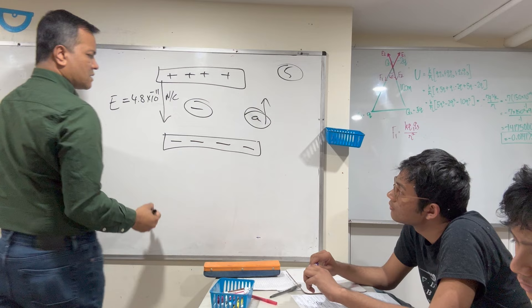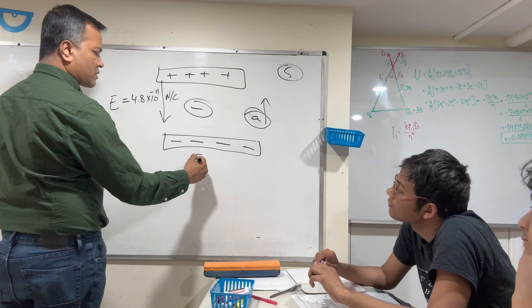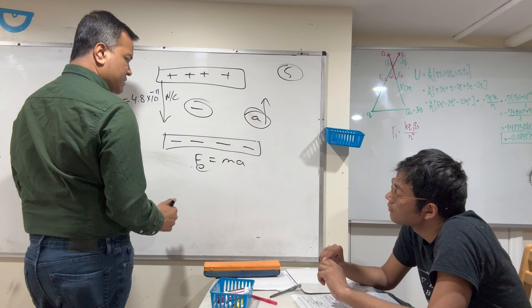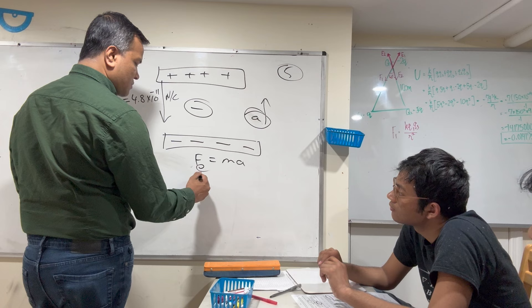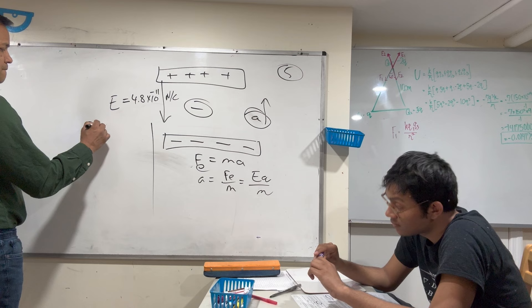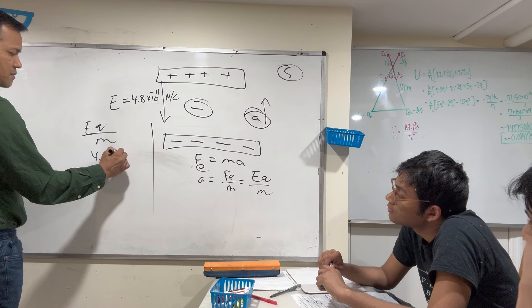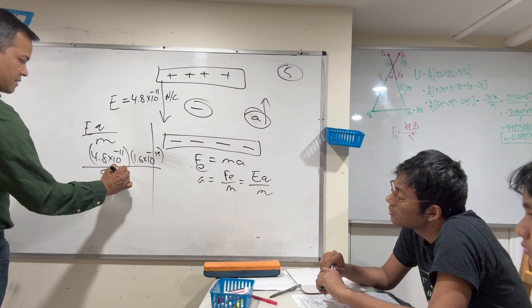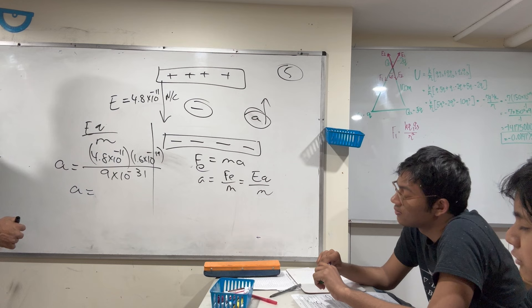We need to find acceleration. Using Newton's second law: F = ma, so a = F/m = eE/m. E is 4.8 × 10⁻¹¹, q = 1.6 × 10⁻¹⁹ Coulombs, mass of the electron is 9 × 10⁻³¹ kilograms. So acceleration is about 8.4 meters per second squared.